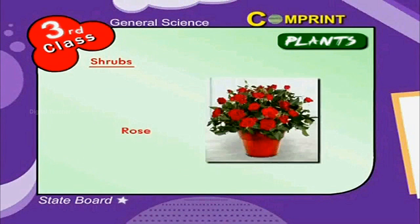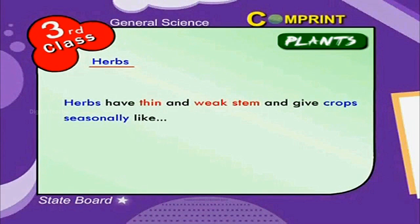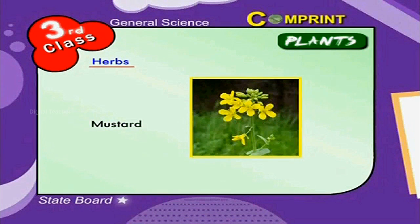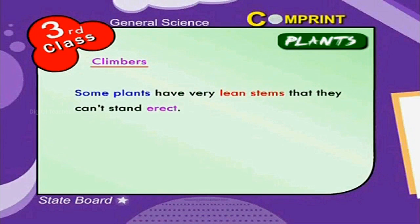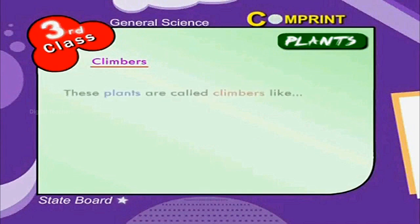Shrubs have small and hard stems. They bear flowers like jasmine, hibiscus and rose. Herbs have thin and weak stems and give crops seasonally like paddy, chillies, mustard, etc.